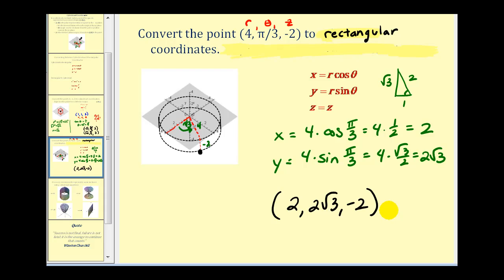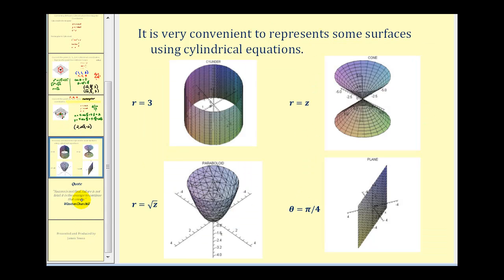One last thing to mention: there are some surfaces that are very convenient to represent using cylindrical equations. R equals three creates a circular cylinder; R equals Z would be a cone; R equals the square root of Z would be a paraboloid; and theta equals pi over four would be a plane. We'll talk more about cylindrical equations in the next video. I hope you found this video helpful — thank you for watching.